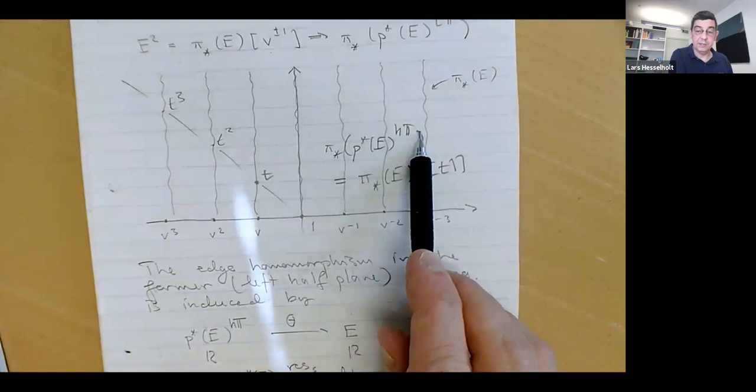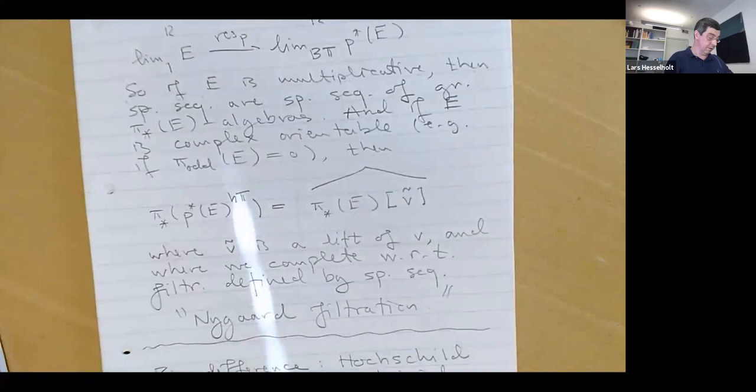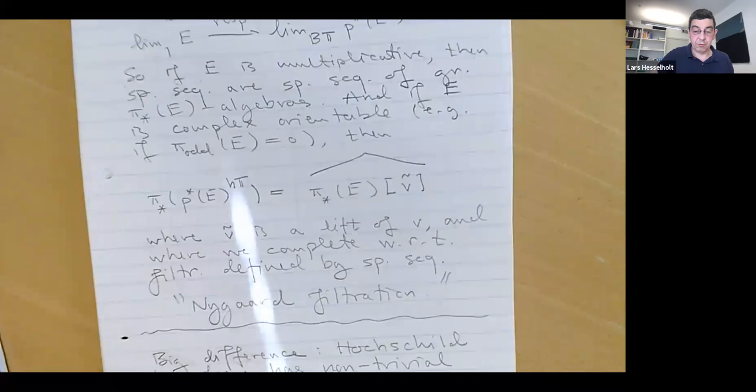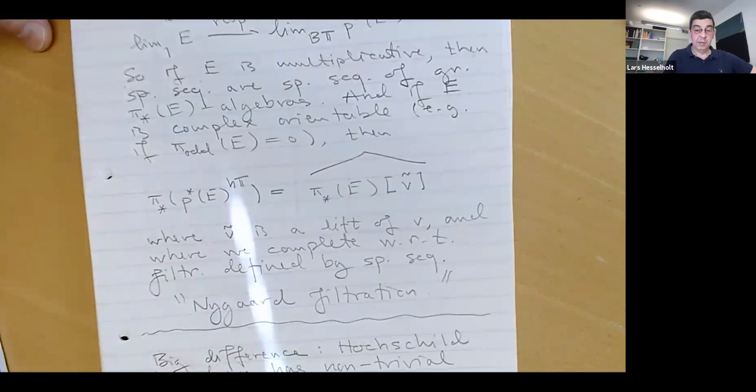The important thing is that this is a pi-star-E algebra to begin with. If it's not a pi-star-E algebra, we cannot call it a power series algebra. This filtration corresponds to what in p-adic Hodge theory is called the Nygaard filtration — this name is now also used in topology.